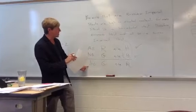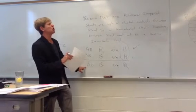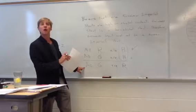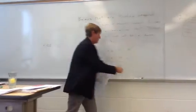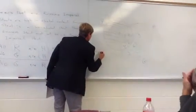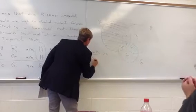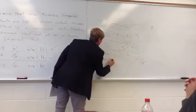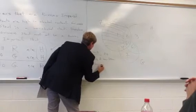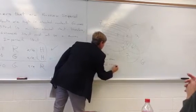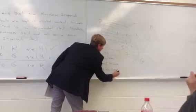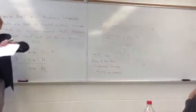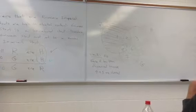Now, to determine if it's valid or not, we take a look at our conclusion. It says no G are R. Has no G are R been diagrammed? The answer to that question is yes. No G are R has been diagrammed. This one is valid. No G are R has been diagrammed because 4 and 5 are shaded, and 4 and 5 is the sector that represents no G or R.